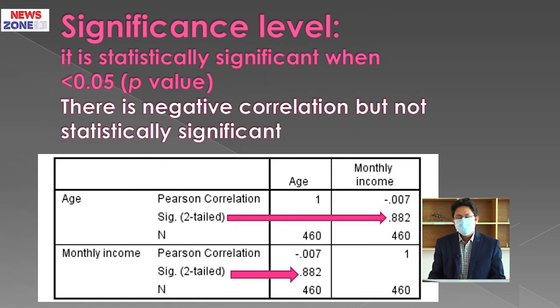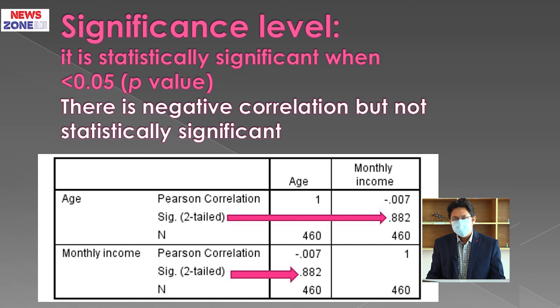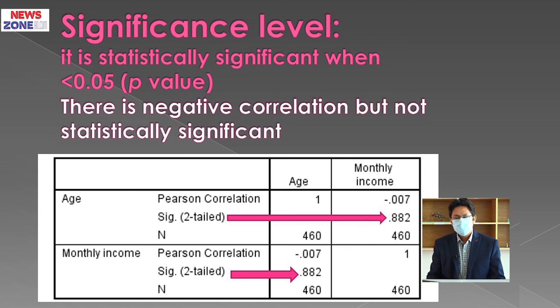The output also shows the significance level, or p-value. We know that if p is less than 0.05 the result is statistically significant; if p is more than 0.05 it is not. Here, the two-tailed significance is 0.882, which is much greater than 0.05, so it is not statistically significant. We can conclude that age and income are weakly and negatively correlated, but this correlation is not statistically significant. Thank you, Assalamualaikum.